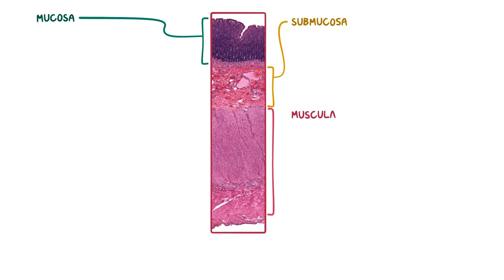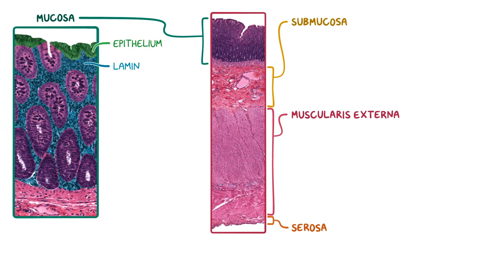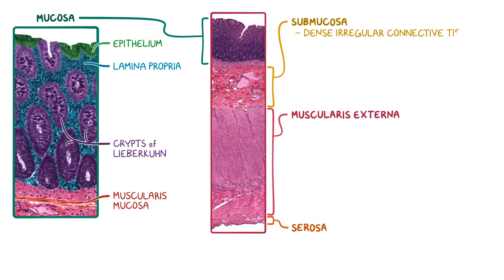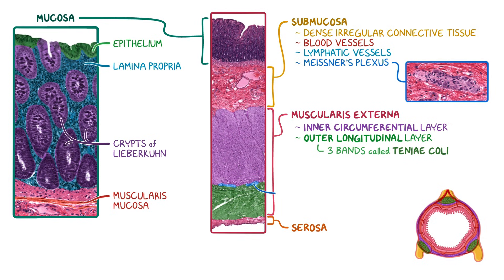As a quick recap: the colon has four main layers — the mucosa, submucosa, muscularis externa, and the outermost layer of serosa. The mucosa is comprised of an epithelium, lamina propria, crypts of Lieberkühn, and muscularis mucosa. The submucosa consists of dense irregular connective tissue, blood vessels, lymphatic vessels, and Meissner's plexus. The muscularis externa is a thick layer of smooth muscle with an inner circumferential layer and an outer longitudinal layer organized into three bands called tinea coli, with the myenteric plexus between the layers. The serosa is a thin layer of connective tissue containing blood vessels and nerves.